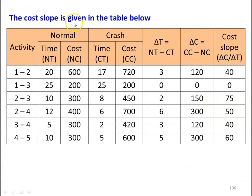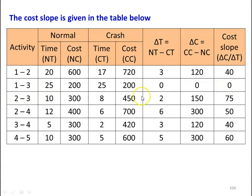Now we calculate the cost slope of the various activities. For activity 1-2: normal time 20, normal cost 600, crash time 17, crash cost 720. Delta T = 20 minus 17 = 3, delta C = 720 minus 600 = 120, cost slope = 120 divided by 3 = 40. For activity 1-3: no change, so delta T, delta C, and cost slope are all 0. For activity 2-3: delta T = 10 minus 8 = 2, delta C = 450 minus 300 = 150, cost slope = 150 divided by 2 = 75.